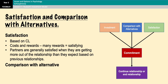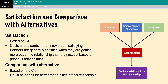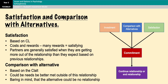The second factor is comparison with alternatives. This factor is about romantic partners asking themselves whether their needs could be better met outside of their current relationship — whether the alternatives are more rewarding and less costly. The alternatives include not just other relationships, but also the possibility of having no romantic relationship at all.